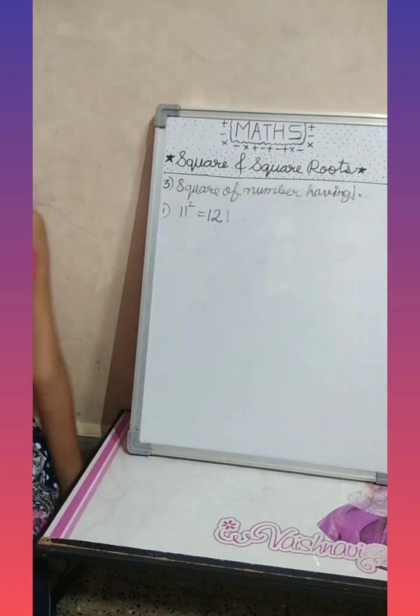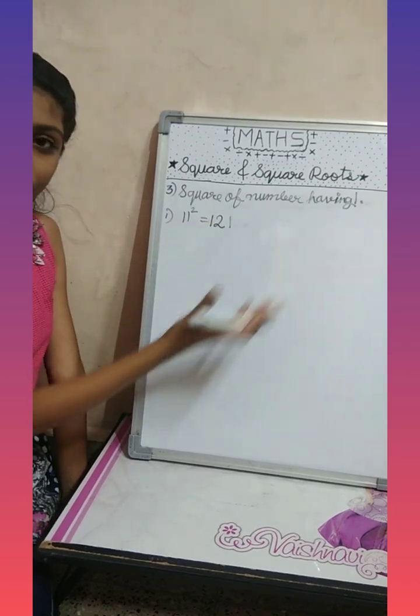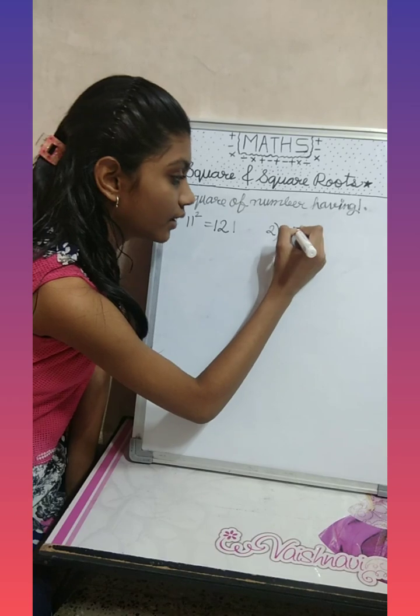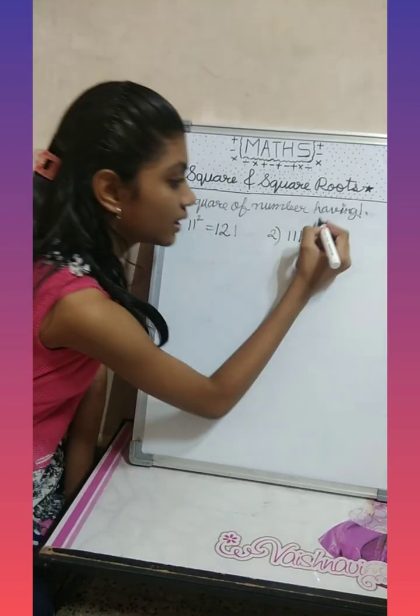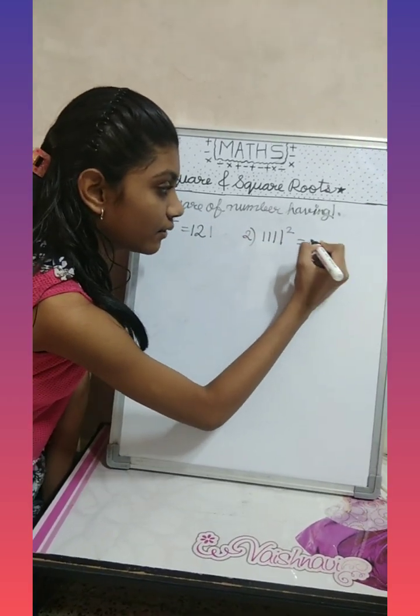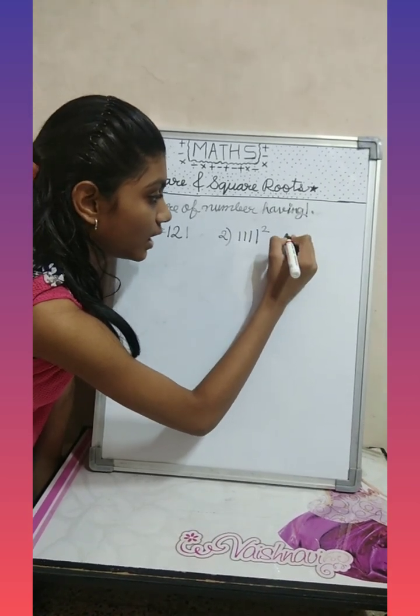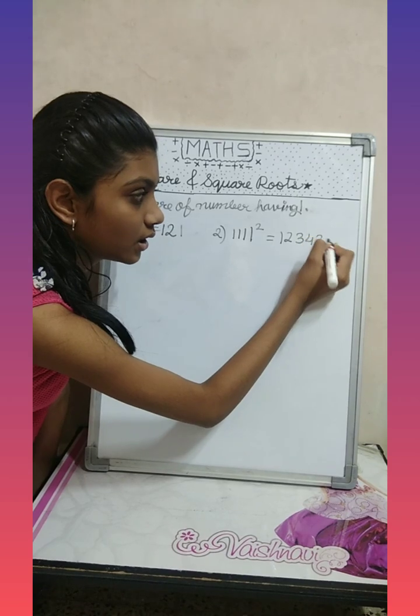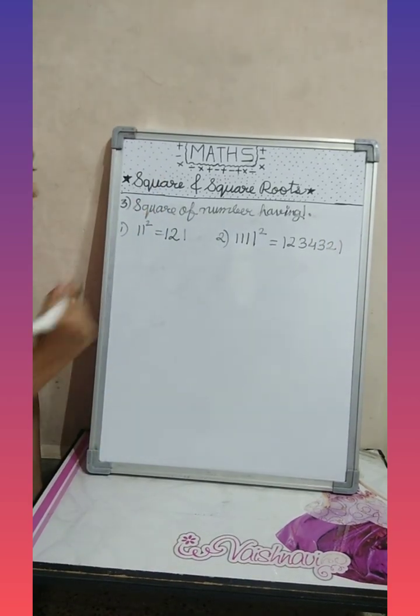Let's see next example: one, one, one, one. It has four times one, then we will write this square like two, two ones, three ones, three, two, two ones, one.